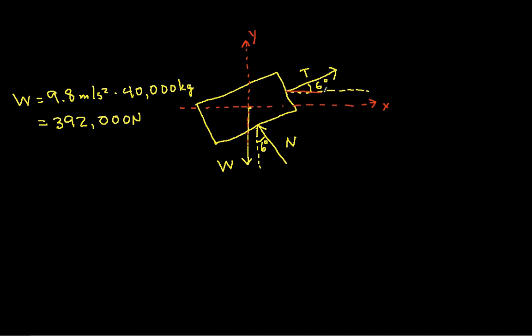So for T, the component in the x direction looks like this. The component in the y direction looks like this. T is a value we don't know. The magnitude of T we don't know. We do know its direction. So we know that the horizontal component is going to be the magnitude times the cosine of 6 degrees. The vertical component is going to be T times the sine of 6 degrees.